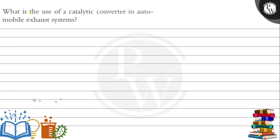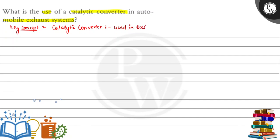Let's see the question: what is the use of the catalytic converter in an automobile exhaust system? We are going to discuss what catalytic converter is used in the automobile exhaust system. First of all, let's see the key concept. A catalytic converter is used in oxidation and reduction reactions.